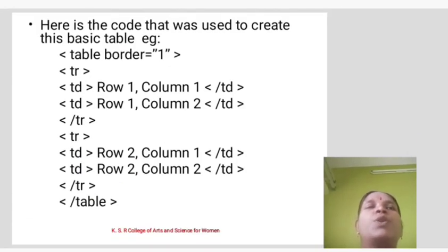Here is the code used to create a basic table. For example: table, tr to create a table row and column, td for first row first column, td for first row second column. Then tr for second row start, row two column one, row two column two, second row end, table end.